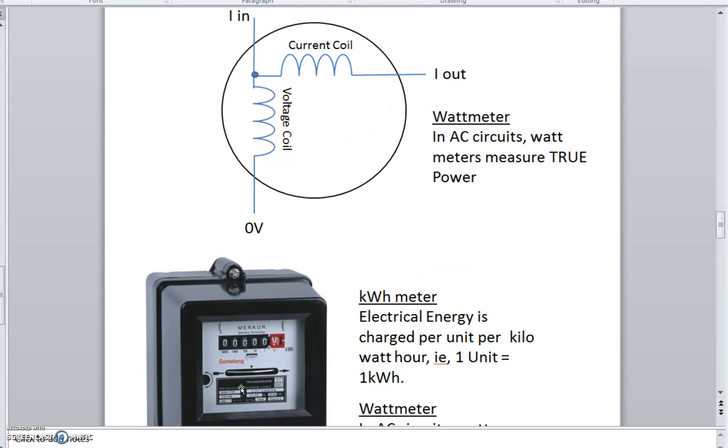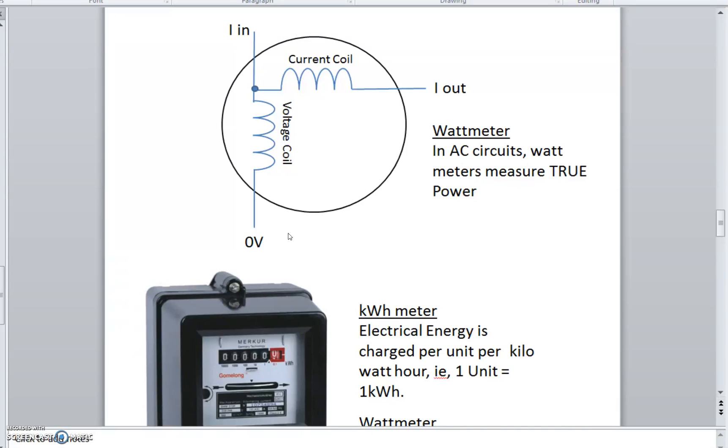If you wanted to measure VA volt amperes to work out the power factor, then what you would do is you would take a voltmeter reading, a separate voltmeter reading. Then you would take an ammeter reading times the two together. That gives you your VA. And obviously, your power factor is your wattmeter reading divided by your voltmeter reading. That's how you look at your power factor.